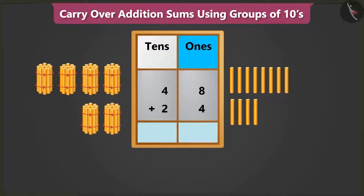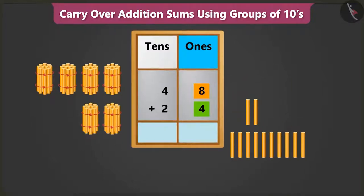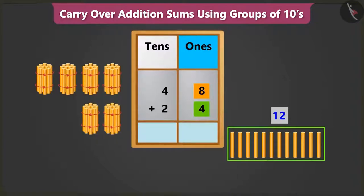First, let's add the numbers in the ones place. We have to add 8 ones to 4 ones. So, count after 8: 9, 10, 11 and 12. This means 8 ones and 4 ones add up to 12 ones.